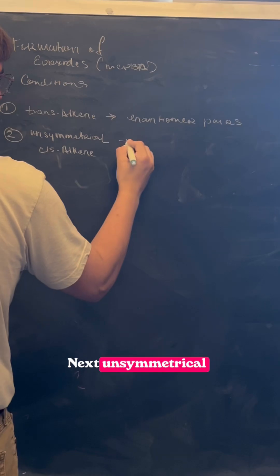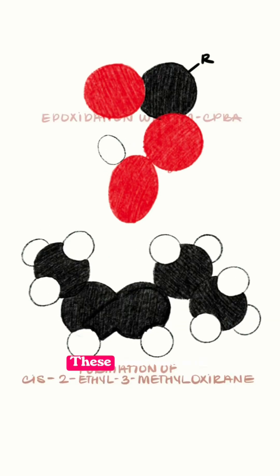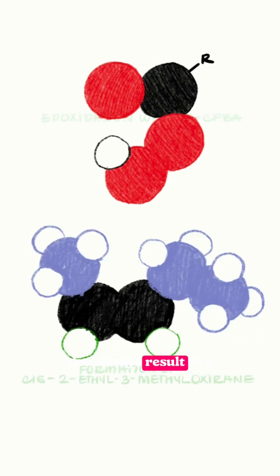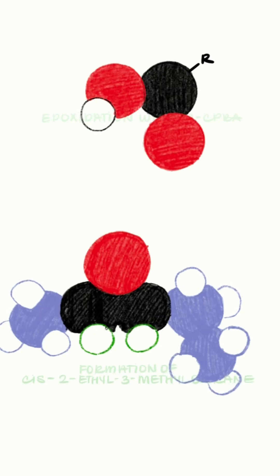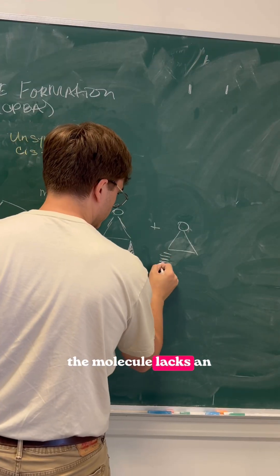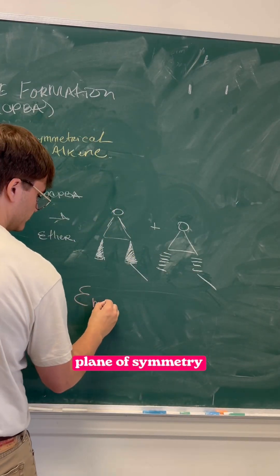Next, unsymmetrical cis alkenes. These reactions will also always result in a pair of enantiomers, since the molecule lacks an internal mirror plane of symmetry.